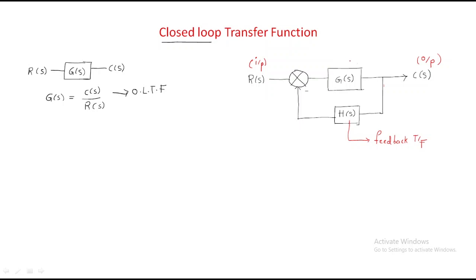G(s) is the forward block or forward transfer function — it transfers the input forwardly to the output. The feedback signal is given back to the input through a summing junction, called a mixer, which mixes the two signals. We generally use negative feedback for control systems; positive feedback is used for oscillators, which are discussed in electronic systems.